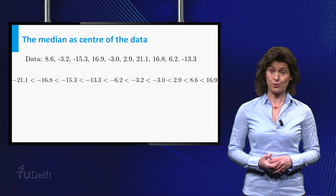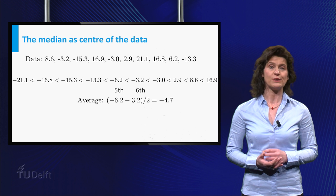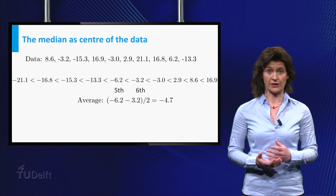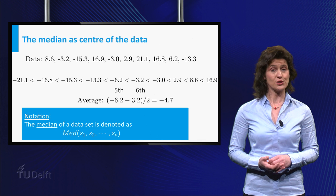If there is an even number of points in the dataset, as here, you choose the average of the two middle points as median, as is done here. So the median of our dataset is equal to minus 4.7.